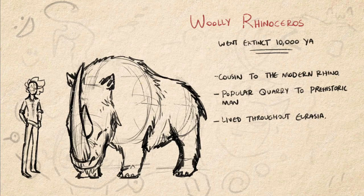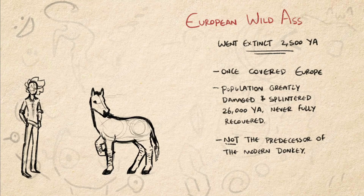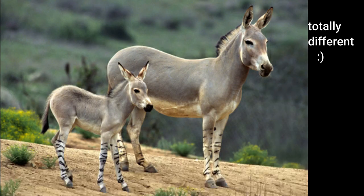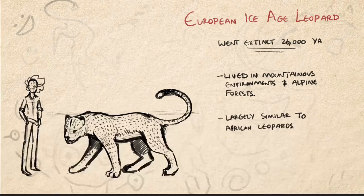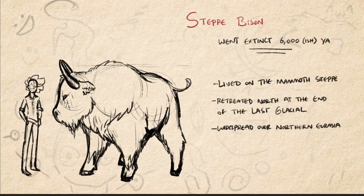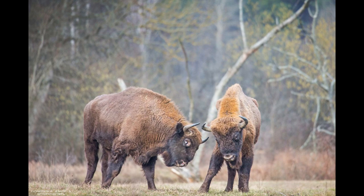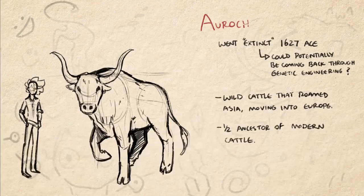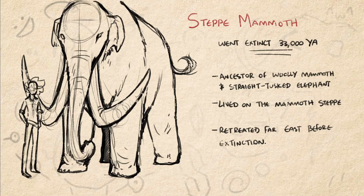The European wild ass: a particularly hardy species of donkey that spread over Europe. While the population splintered greatly around 26,000 years ago, they only went extinct 2,500 years ago — in the same century as the construction of the Pyramid of Giza. Interestingly, they are not the ancestors of the modern donkey; that was the African wild ass. The European Ice Age leopard: a mountain and alpine-dwelling wildcat fairly similar to modern leopards. The steppe bison: massive animals that spread as far as their biome, and are more or less the ancestor of the modern European bison, which are actually hybrids between the steppe bison and the auroch. The aurochs were wild Eurasian bovine domesticated by humans during the Neolithic revolution, originating in Asia and migrating west during warmer interglacial periods. The steppe mammoth: not quite the woolly mammoth — it lived alongside the steppe bison and was the still-living ancestor of other mammoths, primarily the woolly mammoth and straight-tusked elephant.